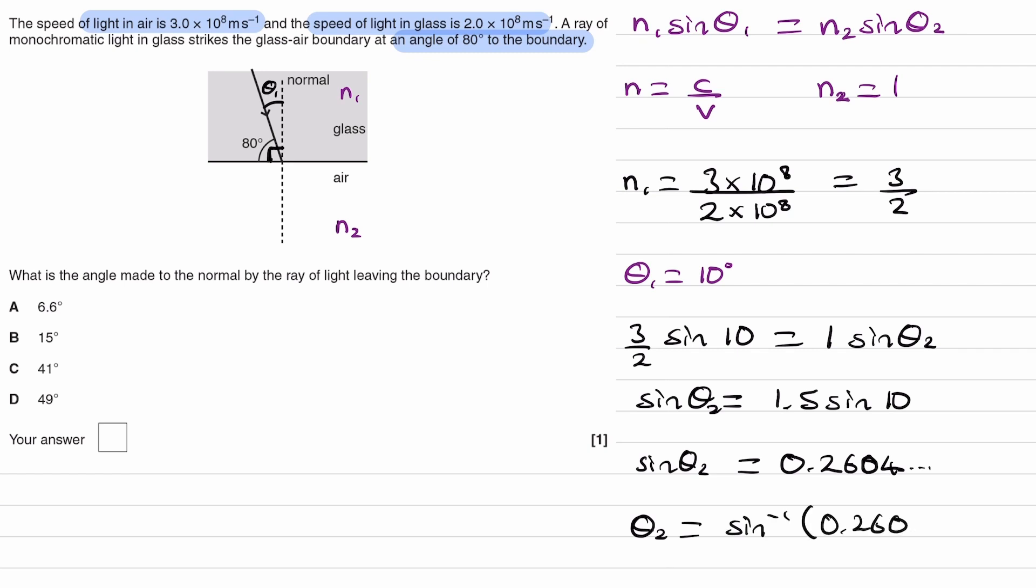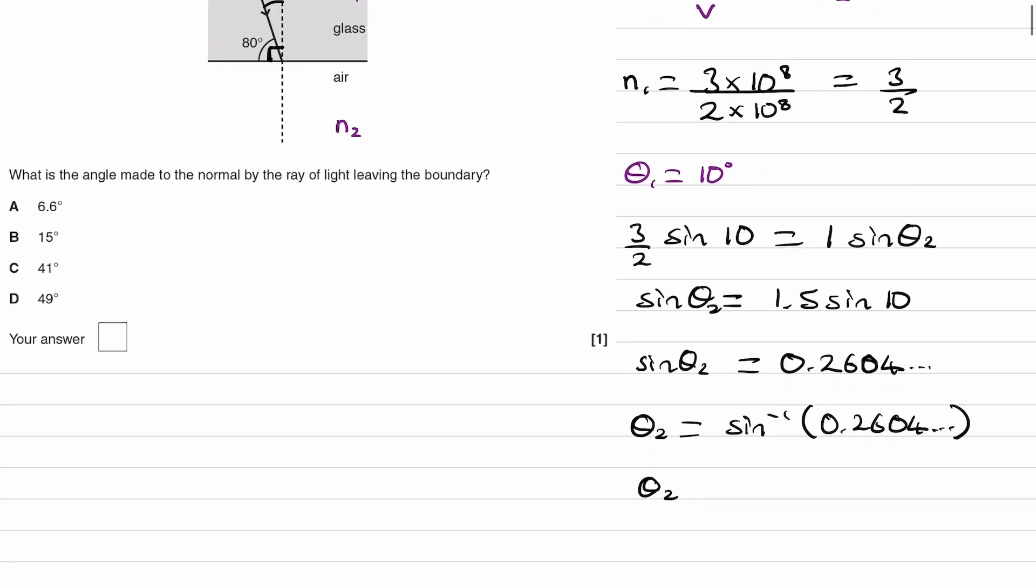I've got that number saved in my calculator. Inverse sine of that, theta 2 would then be 15.1 degrees. So that would be B.